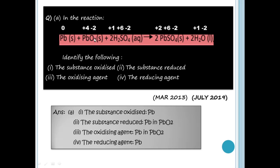If you want to obtain the oxidation number of PbO2: let Pb = x. Then x + 2(-2) = 0, because there is no charge and no ion, so it is equal to 0. So x - 4 = 0.